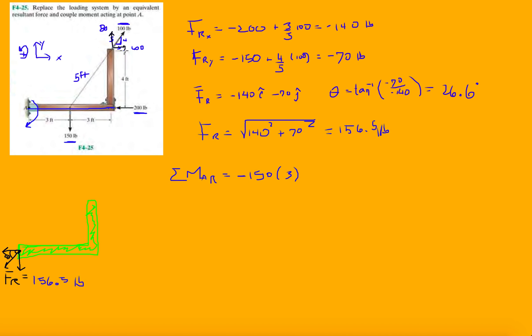The 150 pound force will contribute a moment: -150 times 3 feet (perpendicular distance to A), and it rotates clockwise so it's negative. The 60 pound force from the x-direction component will make it rotate down clockwise, so -60 times 4 feet.